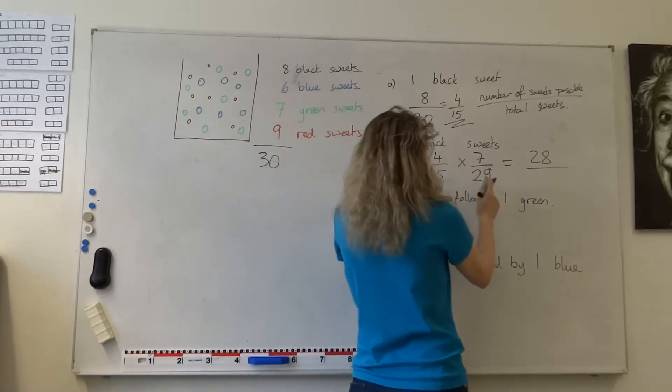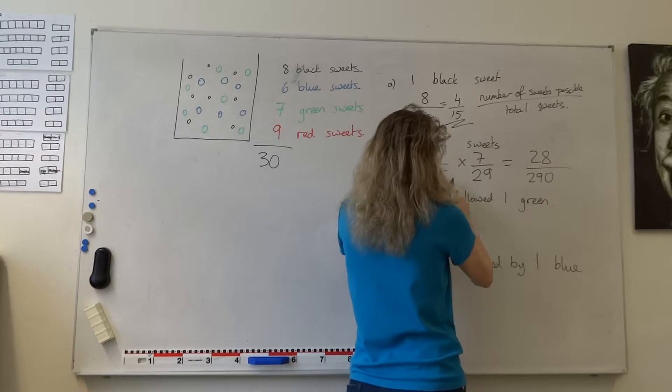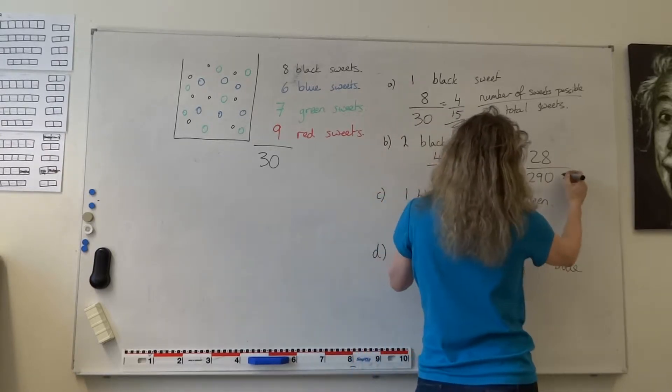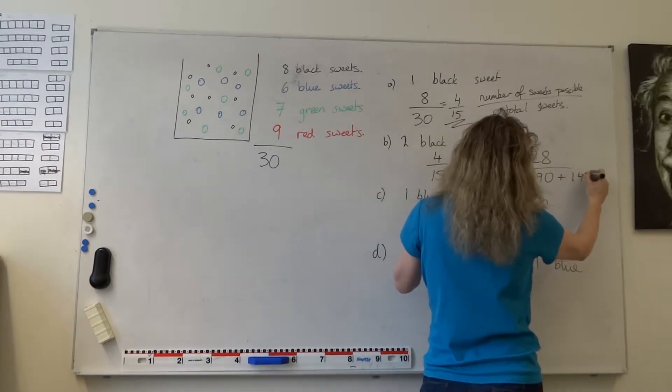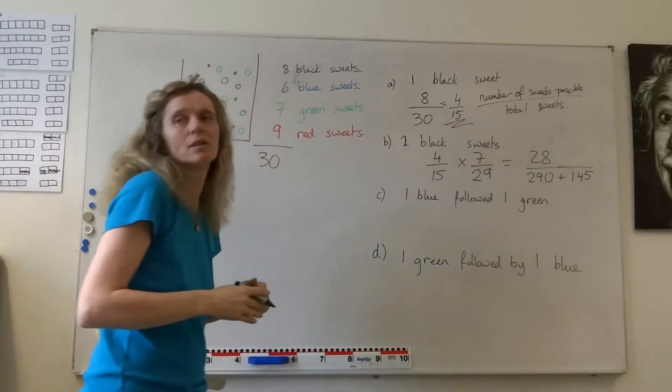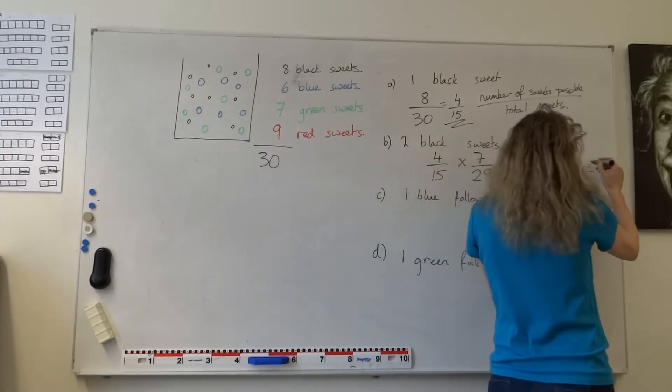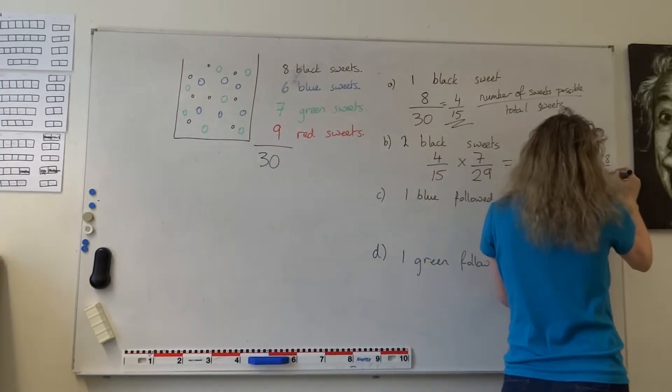And 29 times 15. That would be the same as 10 lots of 29, which would be 290, plus 5 lots of 29, which would be 145. So we'd get 28 four hundred and thirty-fifths.